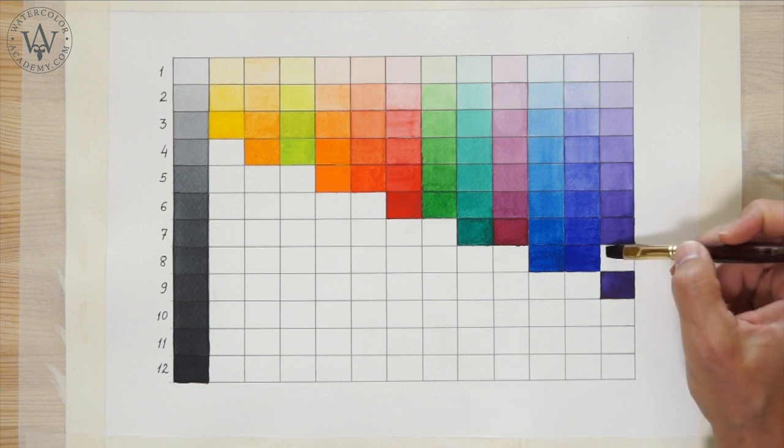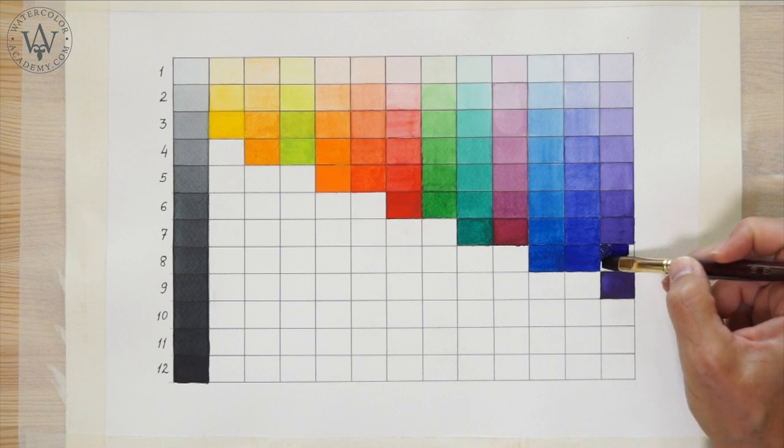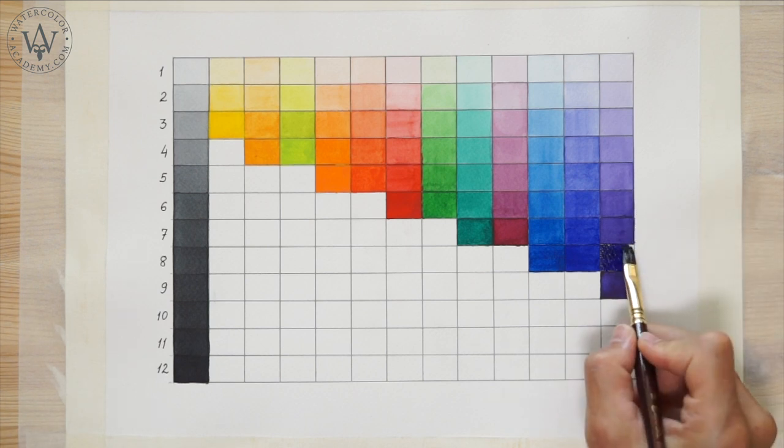Looking at this diagram, you can understand why there is no such thing as highly saturated light blue. A light swatch of blue cannot be saturated, because it has already been diluted with water.